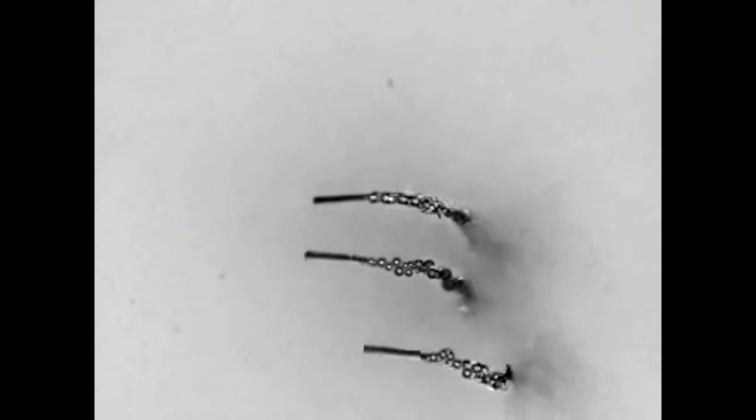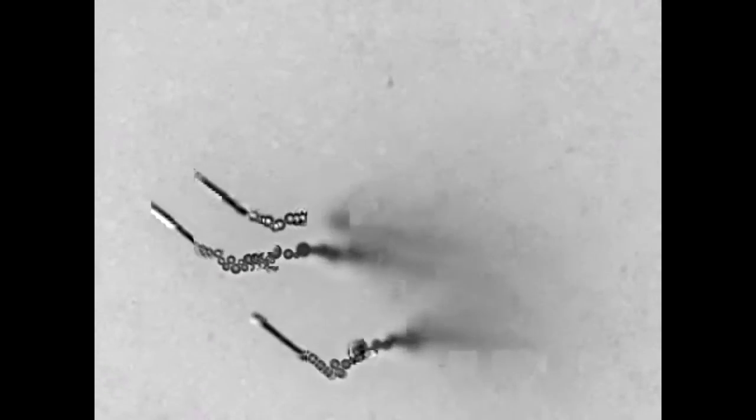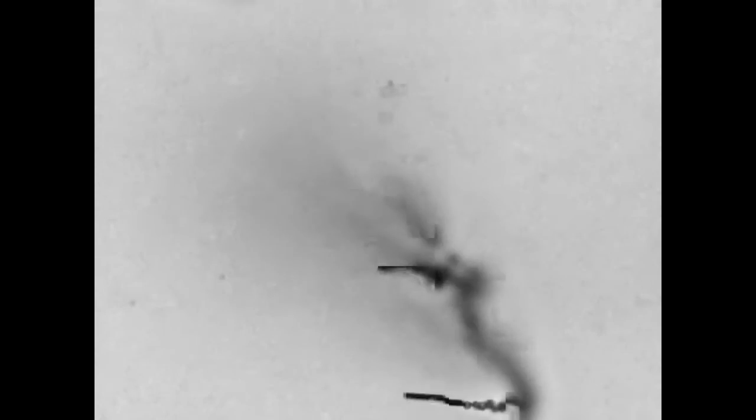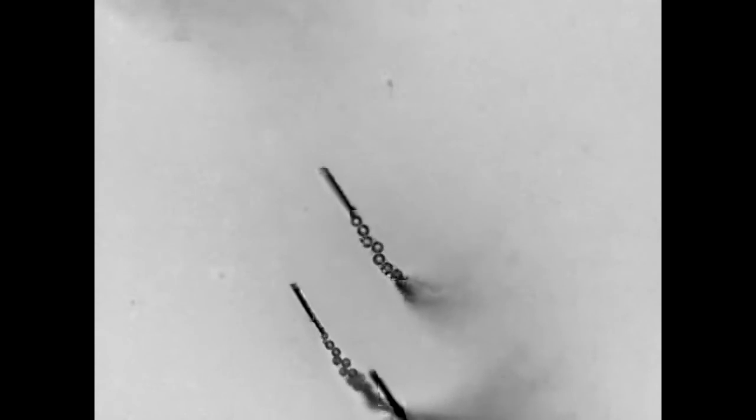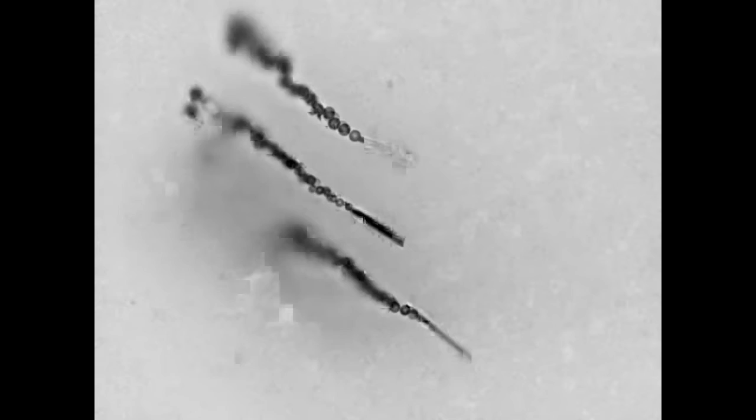Micro-rockets harvest their fuels directly from the local environment at the narrow opening, which reacts along the inner cavity to produce bubbles that emerge out of the wider exterior opening for thrust. That's what you're seeing here, catalytic micro-rockets propelled by oxygen bubbles.